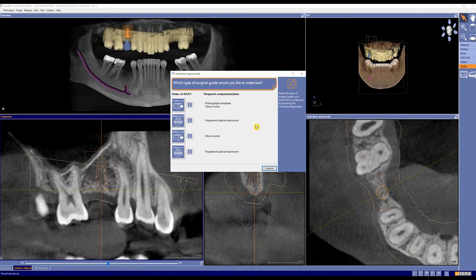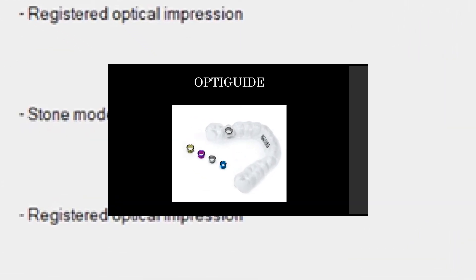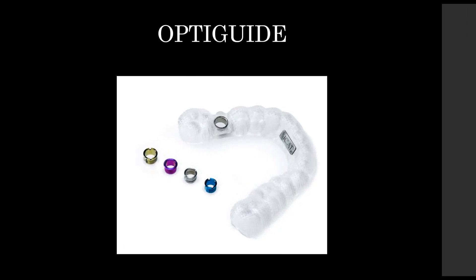Next up we have OptiGuide. The CCAT OptiGuide provides the complete digital workflow, receiving its name from the optimal clinical workflow including digital data only with the highest precision guaranteed. After double checking and working with you on the plan, CCAT will fabricate the OptiGuide on the basis of optical scans with your CEREC machine. The sleeves will be pressed into your OptiGuide and it comes with a certificate of accuracy as well.